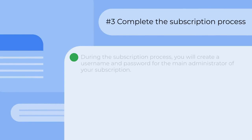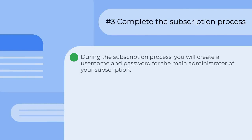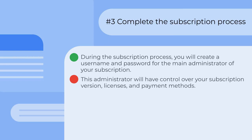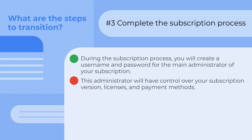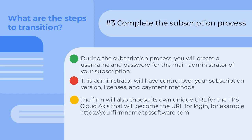Step three is to complete the subscription process. During this subscription process, you will create a username and password for the main administrator of your subscription. This administrator will have control over your subscription version, number of licenses, and which licenses are active, as well as the payment methods. The firm will also choose its own unique URL for TPS Cloud Access — for example, yourfirmname.tpssoftware.com.